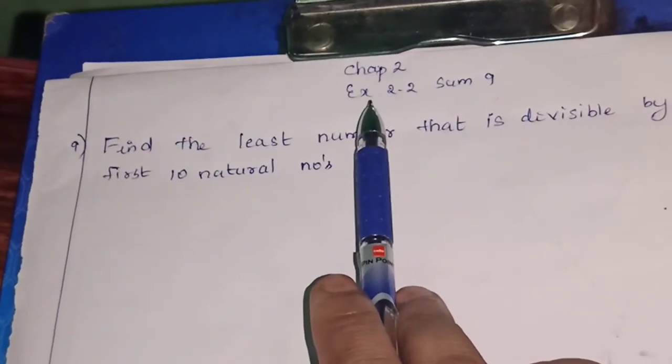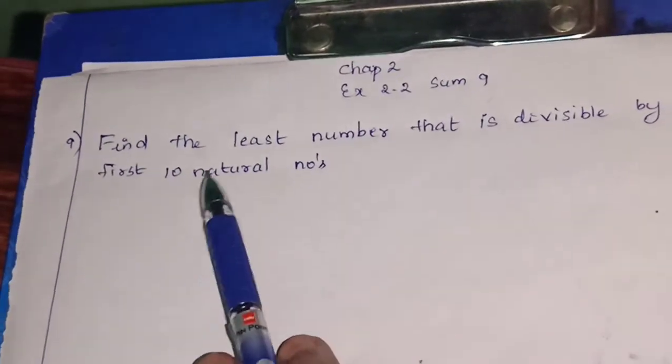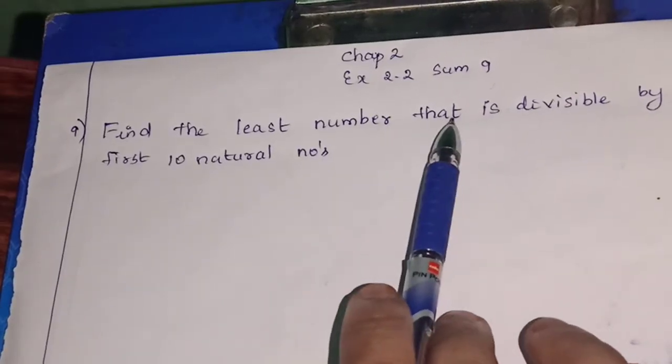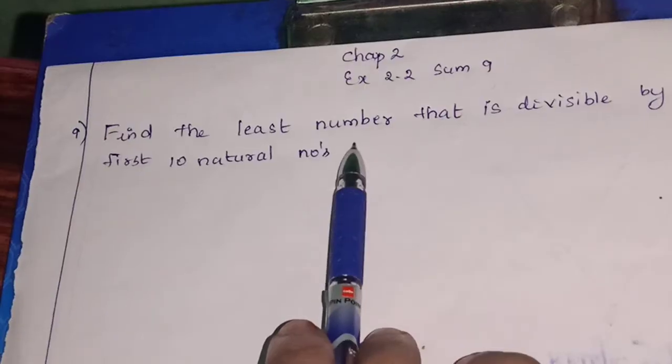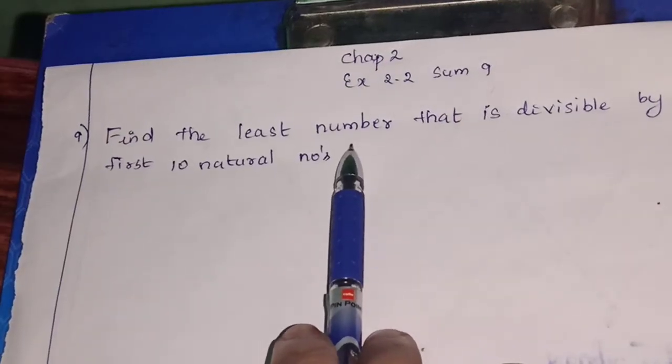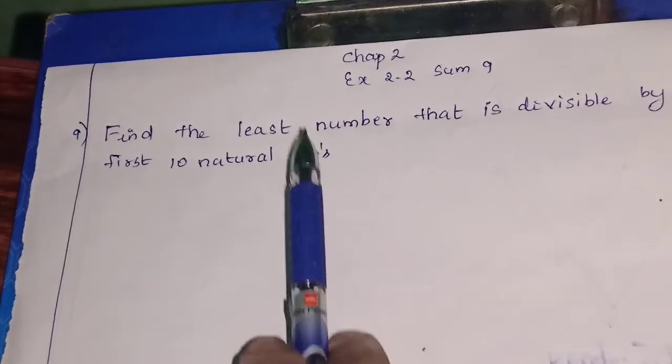Chapter 2, Numbers and Sequences, Ex 2.2, sum 9. Find the least number that is divisible by first 10 natural numbers. Least number, we have to find the least number.